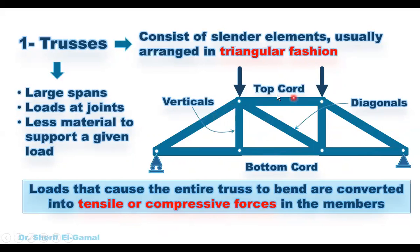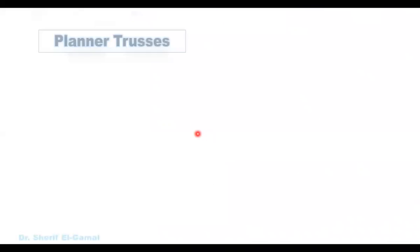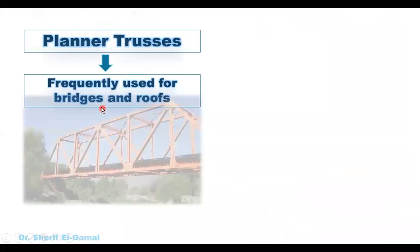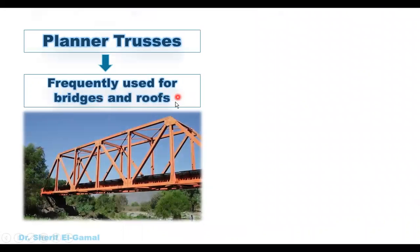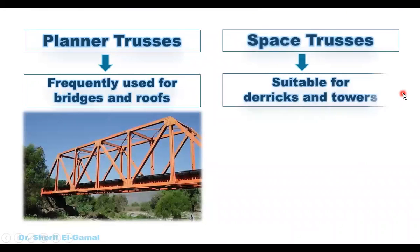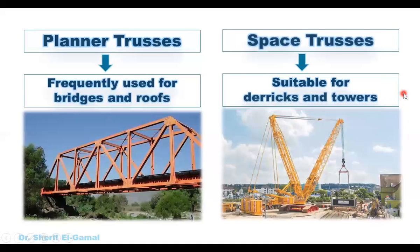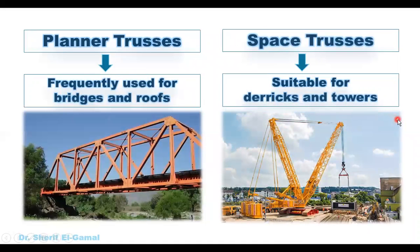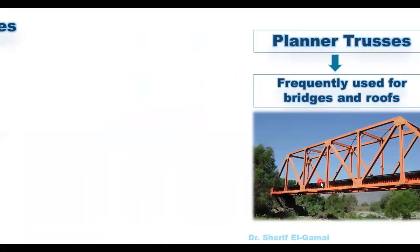All truss members support only tension or compression — no bending moment. Trusses could be planar trusses, usually used in bridges and roofs, or space trusses, which are suitable for derricks and towers.